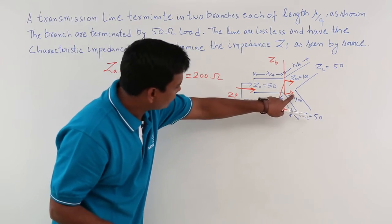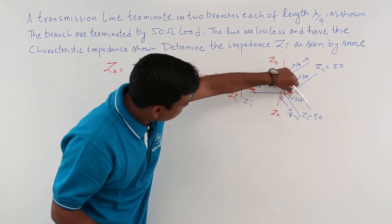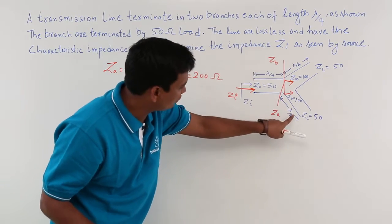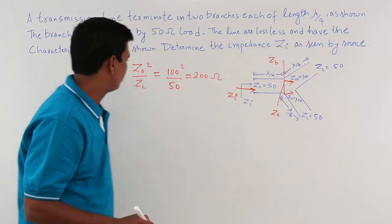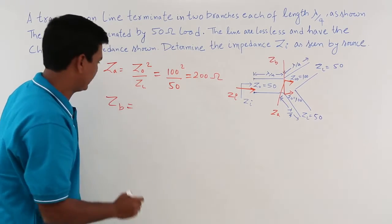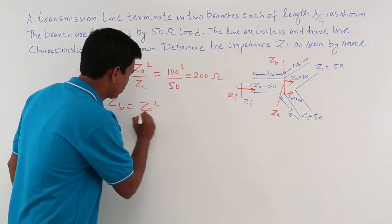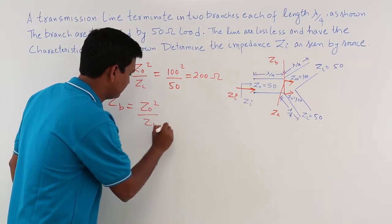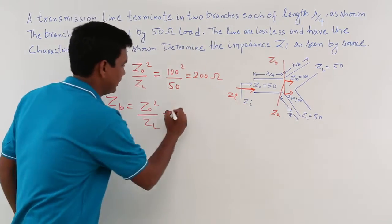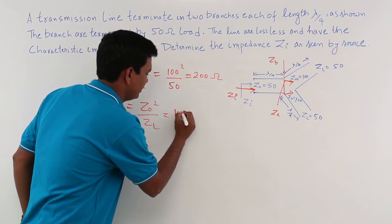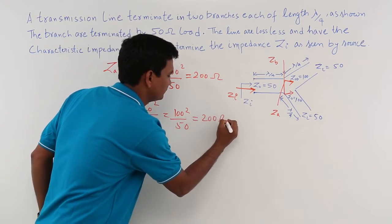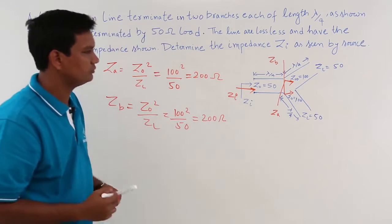The same way I can find ZB. ZB is the impedance seen at the other branch. Again, the length is lambda by 4, so ZB is again Z naught squared by ZL. Here Z naught is 100 and ZL is 50, so it is 100 squared by 50, which comes out to be 200 ohms again.